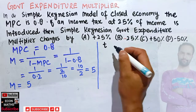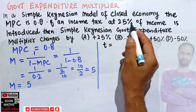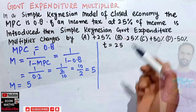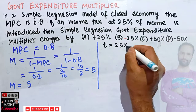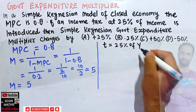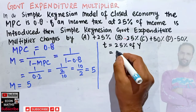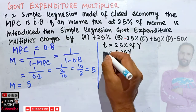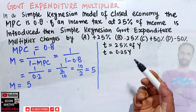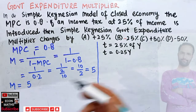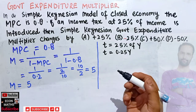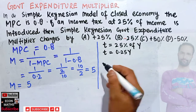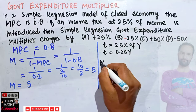The question tells us a tax rate of 25% is being introduced on income — that is, 25% of income Y, which we can write as 0.25 times Y. When this proportional tax rate is imposed, the simple Keynesian government expenditure multiplier will change, and we need to find our new multiplier.